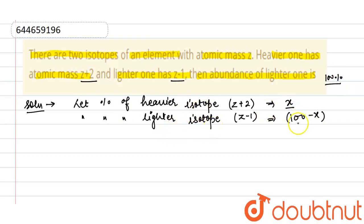the lighter element it will be 100-x. Now we'll multiply the atomic mass of each isotope with their abundance. So it will be x(z+2) + (100-x)(z-1) = z, because it is given that the two isotopes of an element have atomic